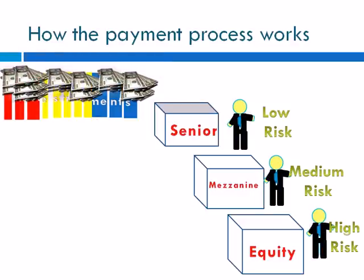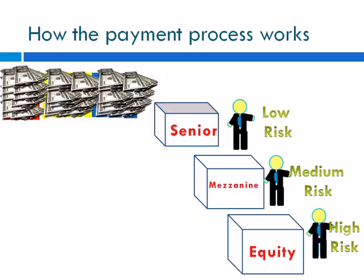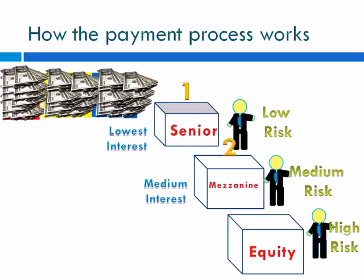Here's how the payment process works: cash is accumulated and the person in the senior tranche receives payment first because he is the low-risk investor, but because of that he gets the lowest interest rate. Then the person in the mezzanine tranche gets paid second and receives an in-between interest rate — not too high, not too low. Finally, the person in the equity tranche — mainly hedge fund investors who take on high risk — gets paid last, but because of that high risk, he receives the highest interest rate.